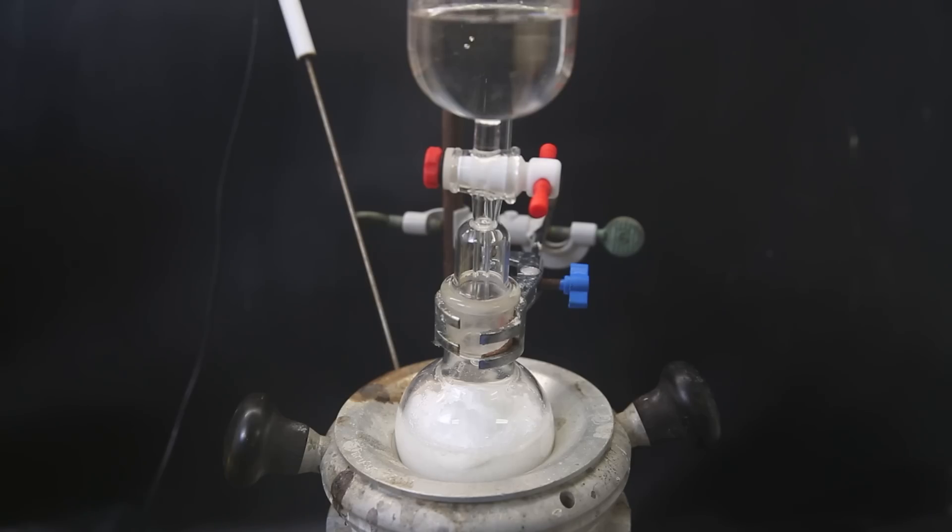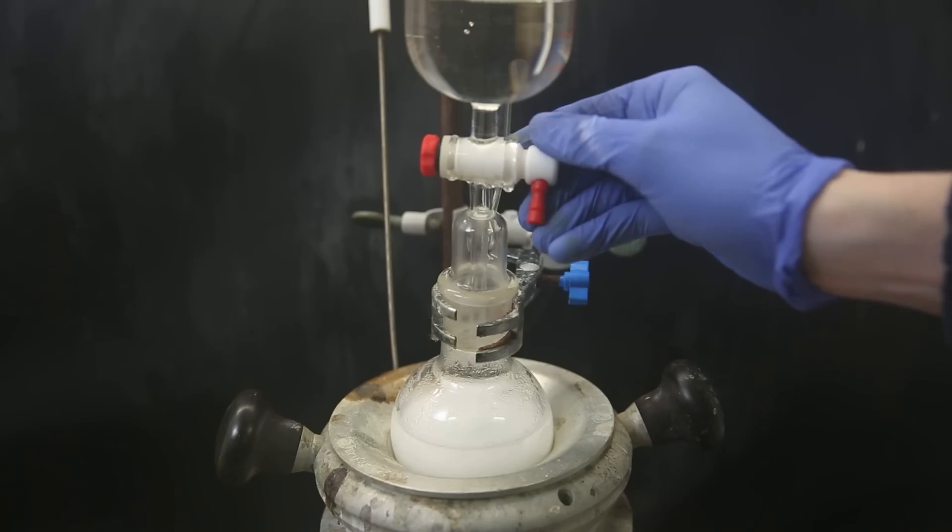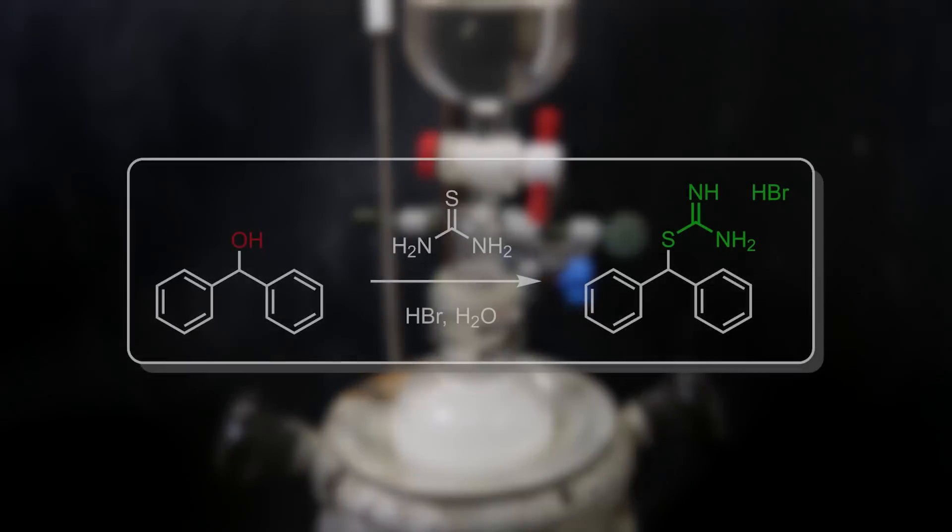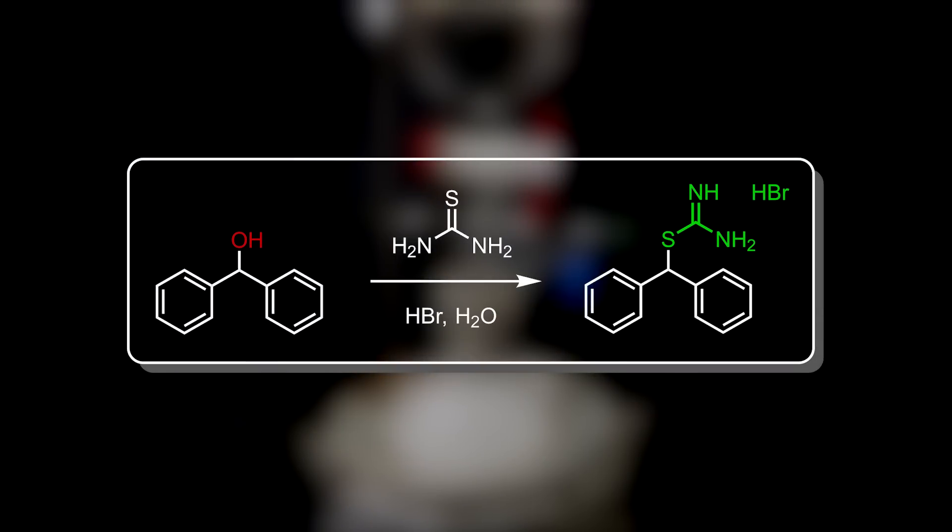I first leave this mixture to stir at 90°C and wait until it loosens up. When that happens, I dropwise add the hydrobromic acid and leave it to stir for an hour afterward. In this reaction, diphenylmethanol reacts with thiourea in the presence of hydrobromic acid to form this sulfide amidinium.